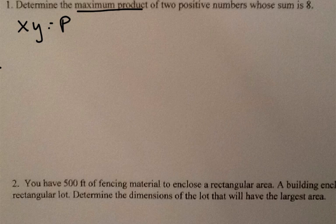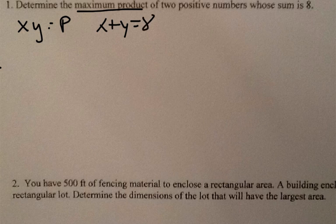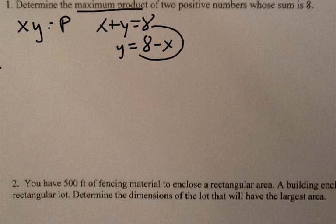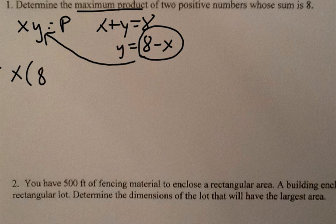Since it says the two positive numbers have a sum of eight, we can also write x plus y equals eight. Now we can isolate either x or y — generally we isolate y, so y equals eight minus x. We're going to substitute that into the original equation in place of y, so x times eight minus x equals p.